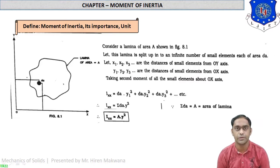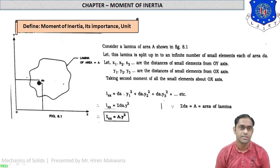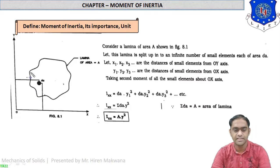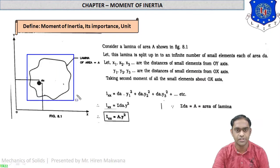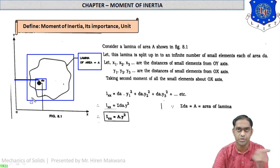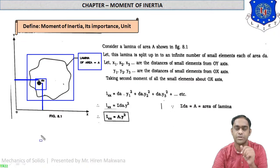How is it useful in calculation? What is its importance? Here on your screen is the definition of moment of inertia along with its unit. There is an area of unusual shape — it is called a lamina of area A. From there, consider a small area dA. The distance of this small area from the Y axis is denoted by X (horizontal distance), and the distance from the X axis is denoted by Y (vertical distance).